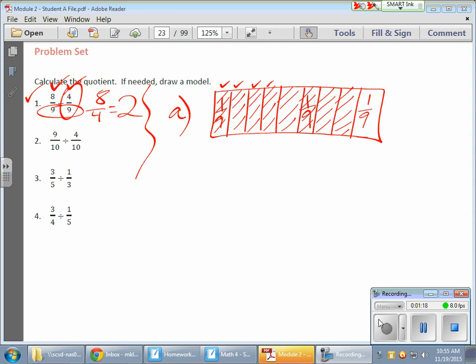I notice that 1, 2, 3, 4, there's a group of 4 ninths. So there's an entire group right there. And I have 1, 2, 3, 4. I have another entire group of 4 ninths. There's another group right there. So my answer is 2. I have 2 groups of 4 ninths that total 8 ninths.